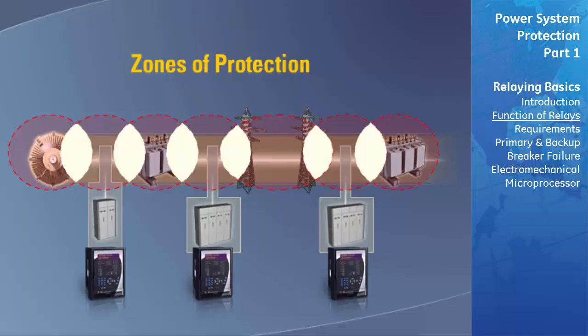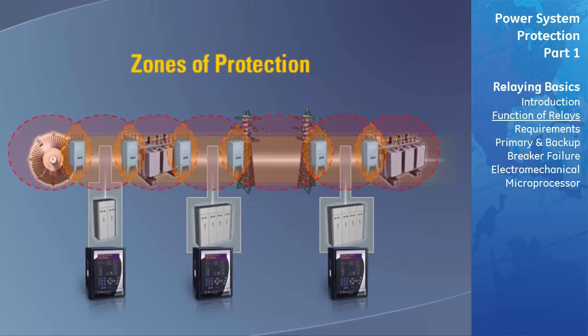For failures within the overlap area, more breakers will be tripped than needed to disconnect the faulty element. However, the overlap areas are relatively small and the probability of failure in this region is very low. Therefore, the tripping of too many breakers for a fault in the overlap area will be infrequent.